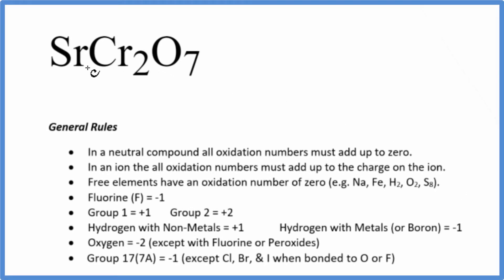In this video, we'll find the oxidation number for the chromium in SrCr2O7. First off, there's no negative or positive sign after this compound, so it's a neutral compound. All the oxidation numbers are going to add up to zero.